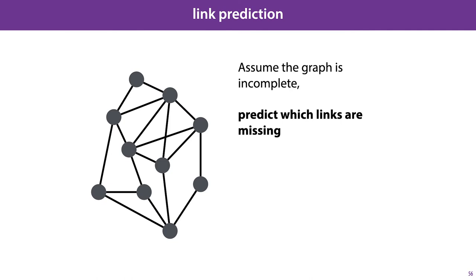The first machine learning task on graphs that we'll look at is link prediction. In link prediction, we assume that the graph is incomplete. That is, we have all the nodes, but we don't have all the links. And we want to predict which links that don't currently exist in the graph might be true as well. For instance, which two people should be friends, or which two proteins may have an as-yet undiscovered interaction?